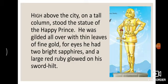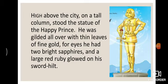High above the city, on a tall column, stood the statue of the Happy Prince. The city के ऊपर एक tall, लंबे से column यानि स्तम्भ के ऊपर खड़ा है — the statue of the Happy Prince. He was gilded all over with thin leaves of fine gold. For eyes he had two bright sapphires, and a large ruby glowed on his sword hilt. You can see in the picture — the blue ones are sapphires (नीलम) and the red one is the ruby.